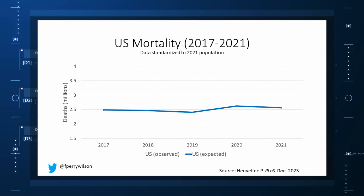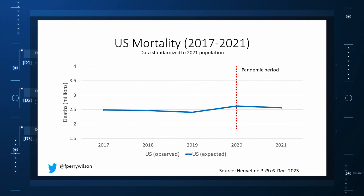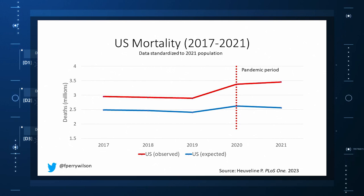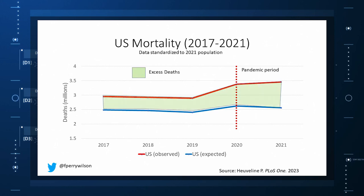Note that there's a small uptick in expected deaths in 2020, reflecting the pandemic, which returns to baseline levels by 2021. This is because that's what happened in Europe — by 2021, the excess mortality due to COVID-19 was quite low. Here are the actual deaths in the U.S. during that time. Highlighted here in green is the excess mortality over time in the United States.